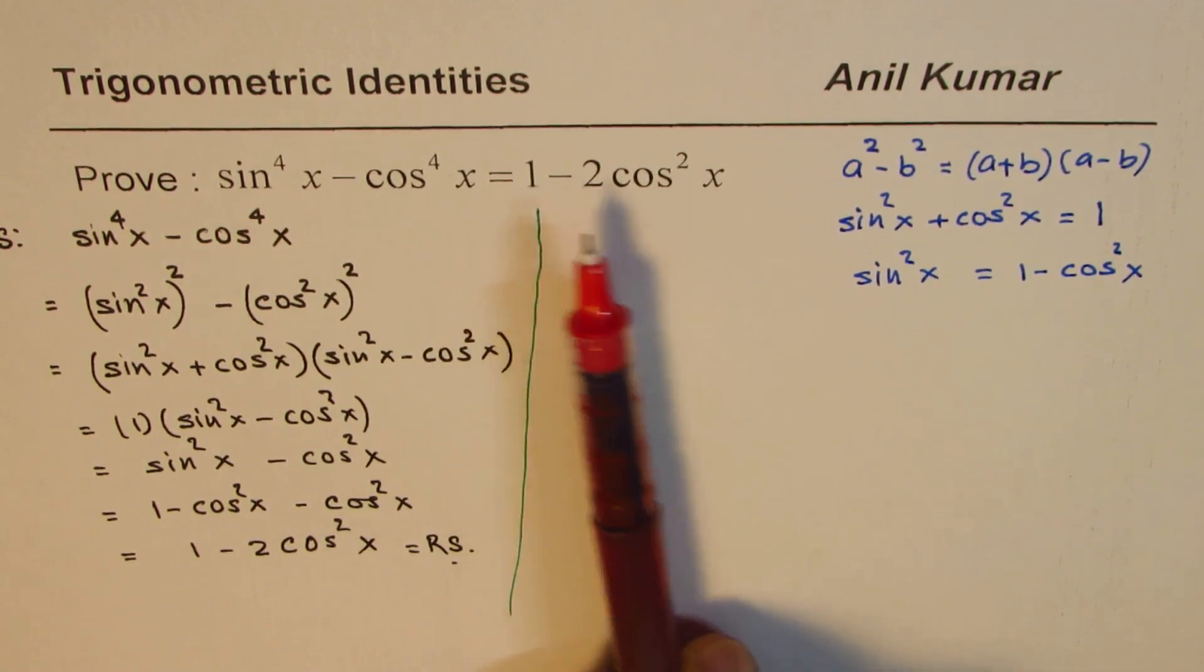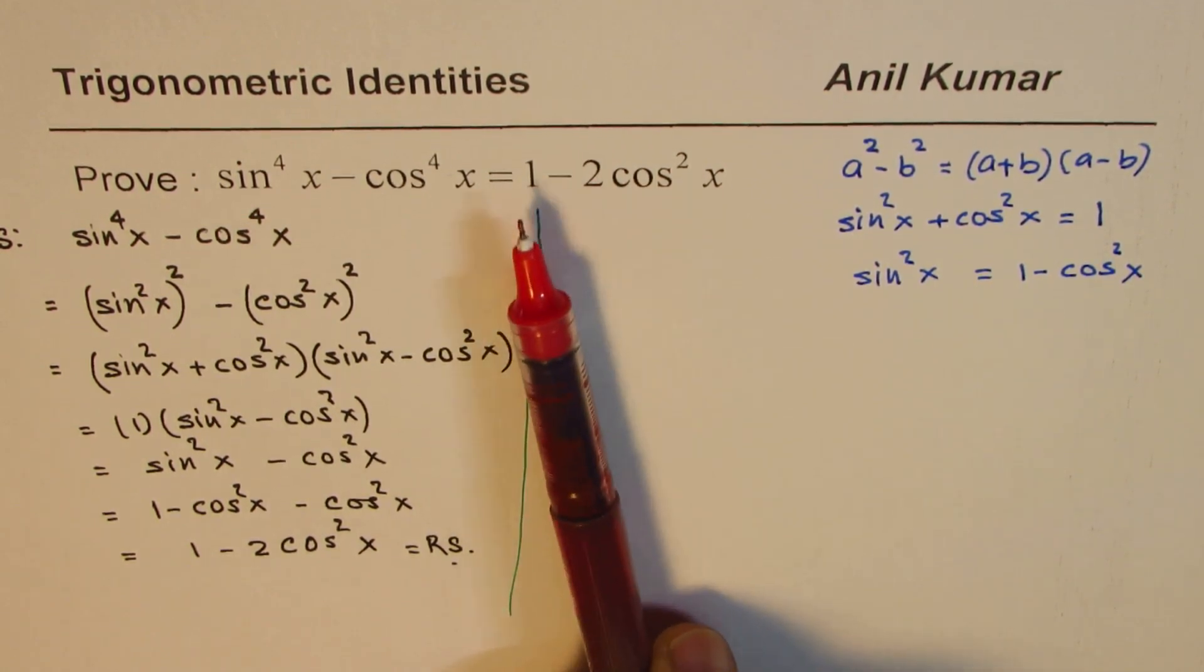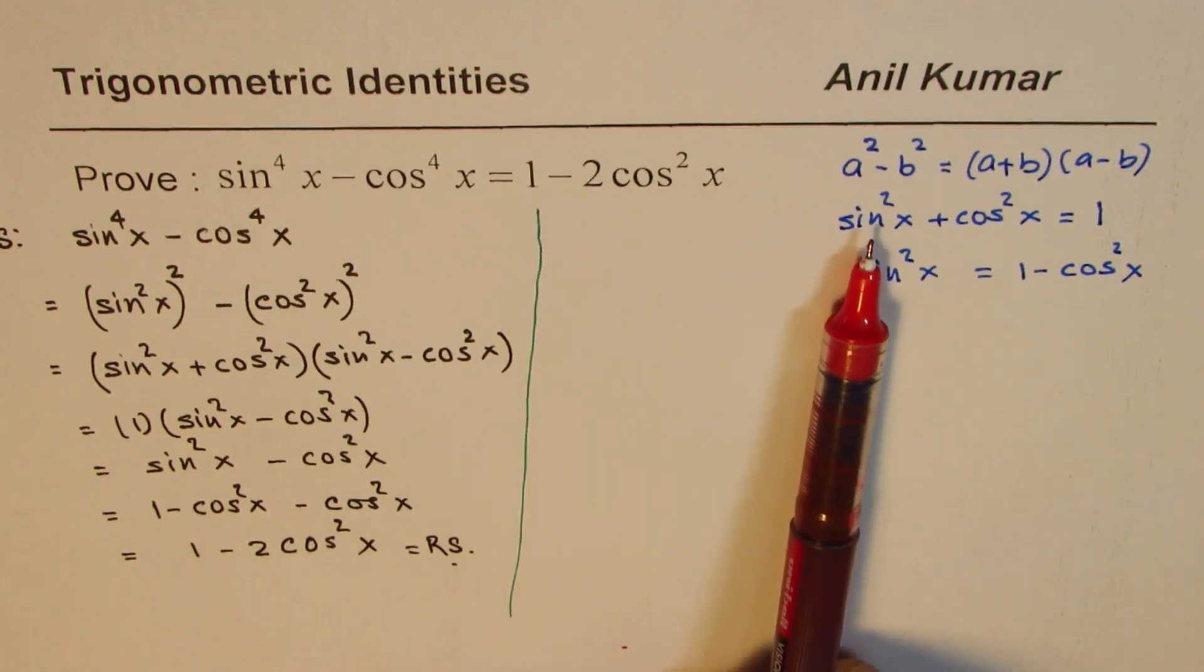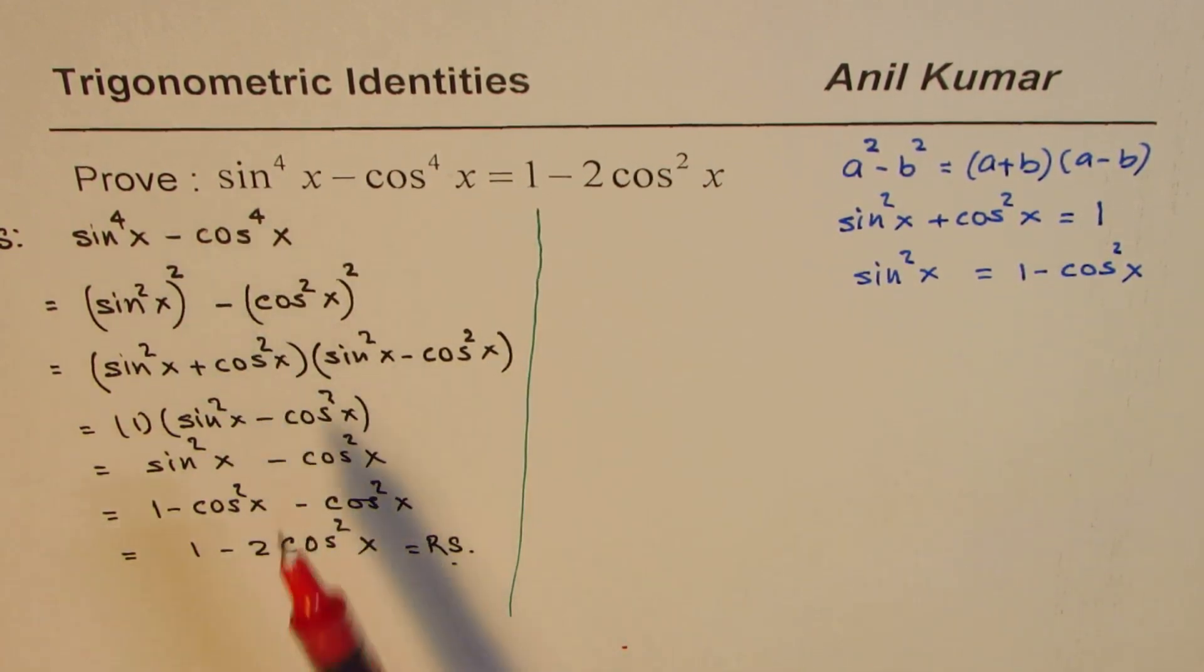If you want to work it out, it will be slightly more complicated, replacing 1 by sin²x plus cos²x and then going backwards. So it gives you an idea.